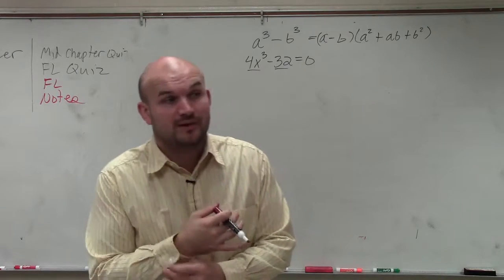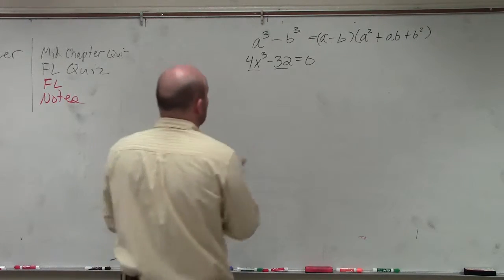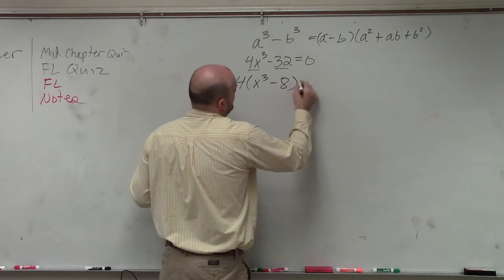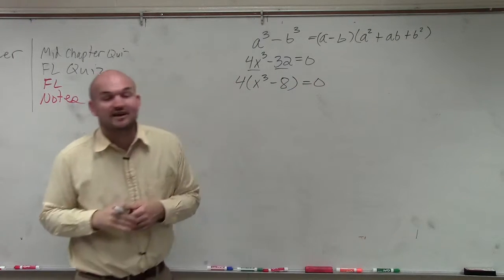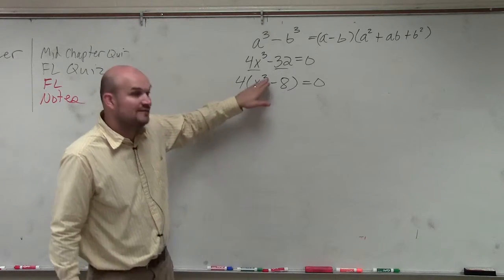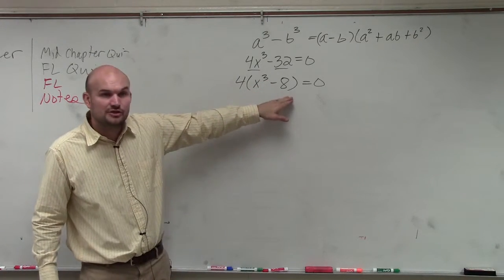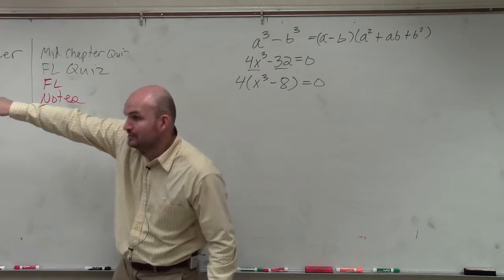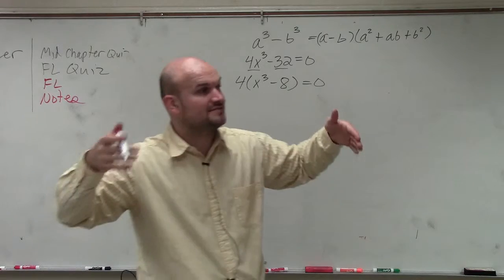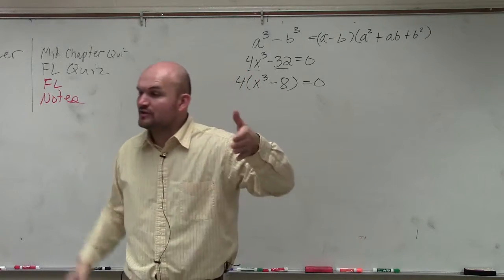But there is something that we've been talking about ever since we started factoring. And that's always factoring out the GCF. Now, if I factor out a common factor of 4, you can see that I just have a cube number minus another cube number. Because 8 is a cube number. A cube number is a number you can multiply by itself three times. So therefore, 2 times 2 times 2 would give you 8.